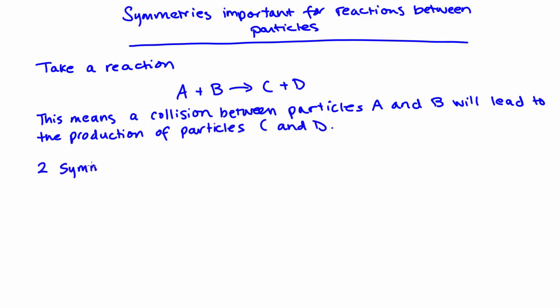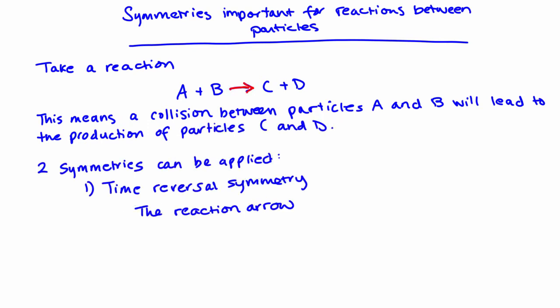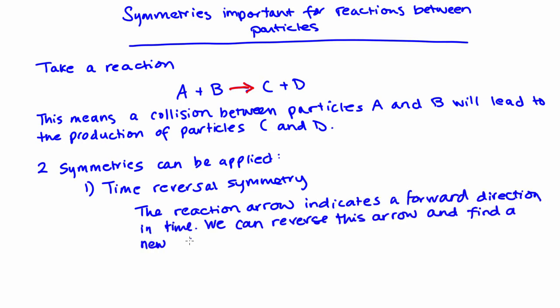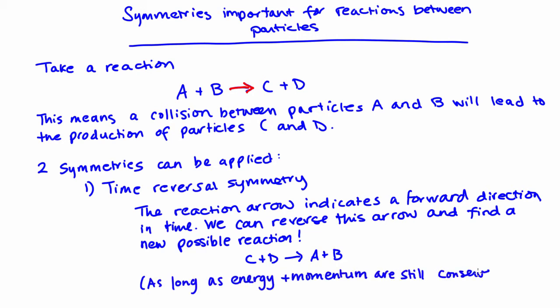The first symmetry we're going to talk about is time reversal symmetry. Time reversal symmetry means we can reverse the time arrow in our reaction diagram and get a valid alternative reaction. This one can sometimes be tricky. Energy may or may not be conserved when you simply reverse the arrow, meaning that you might need to add energy to a system for a particular reaction to happen.